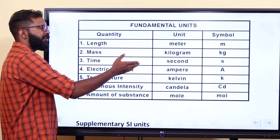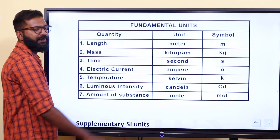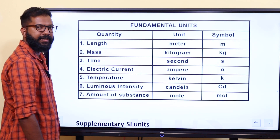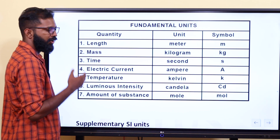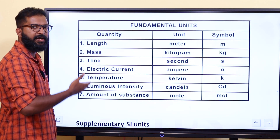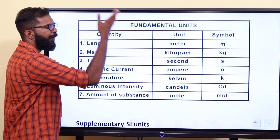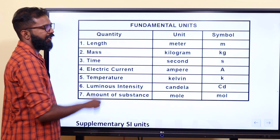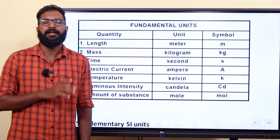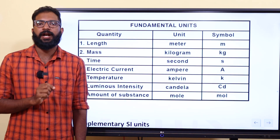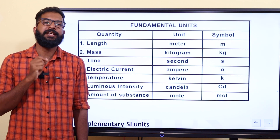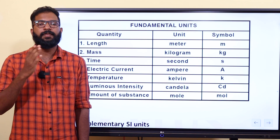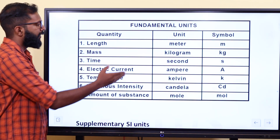Time is measured in second. Electric current is measured in ampere — for example, 1 ampere, 2 ampere, 3 ampere — and is represented by the symbol capital A. Temperature in SI is not measured in degree Celsius; it is measured in Kelvin, with symbol K.